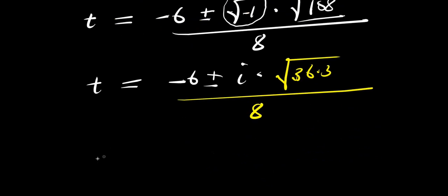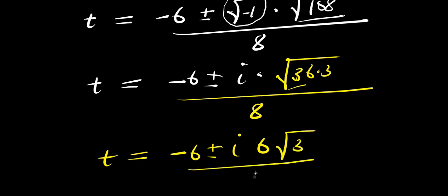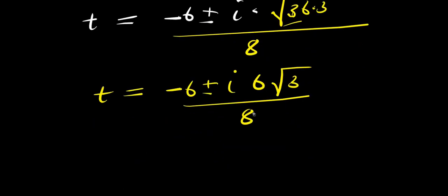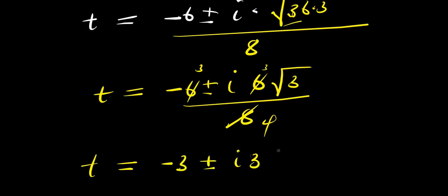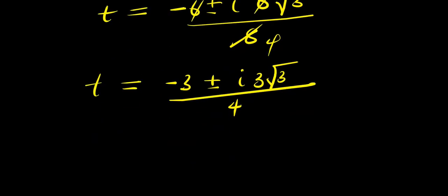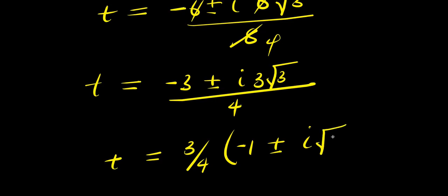Continuing: t equals negative 6 plus or minus i times 6 root 3, divided by 8. Simplifying by dividing numerator and denominator by 2: t equals negative 3 plus or minus 3i root 3, all divided by 4. Factoring out 3 over 4: t equals 3 over 4 times negative 1 plus or minus i root 3.